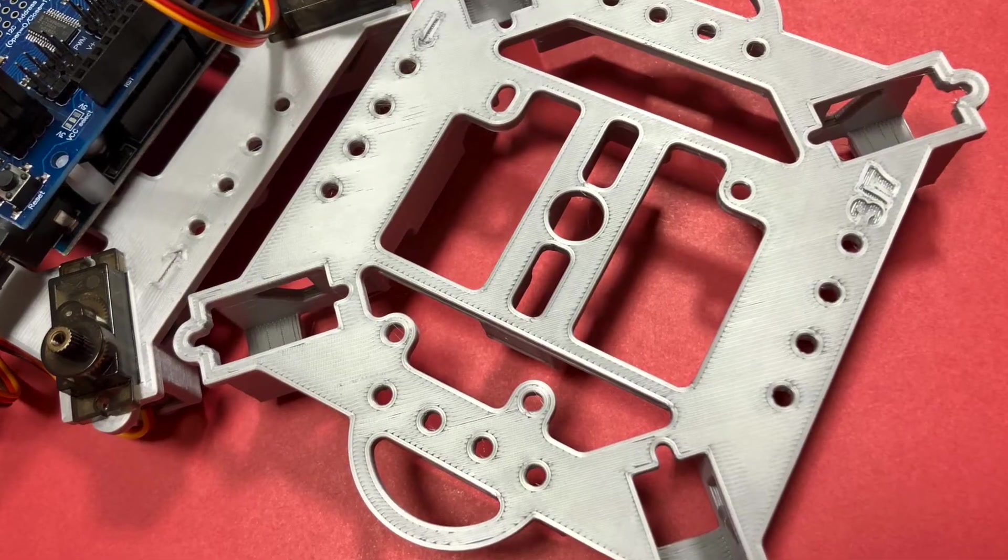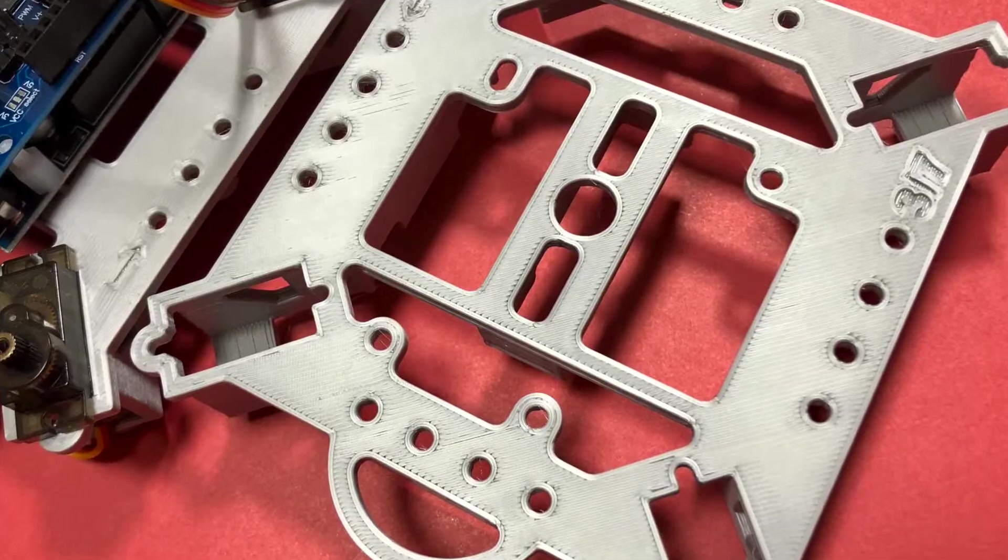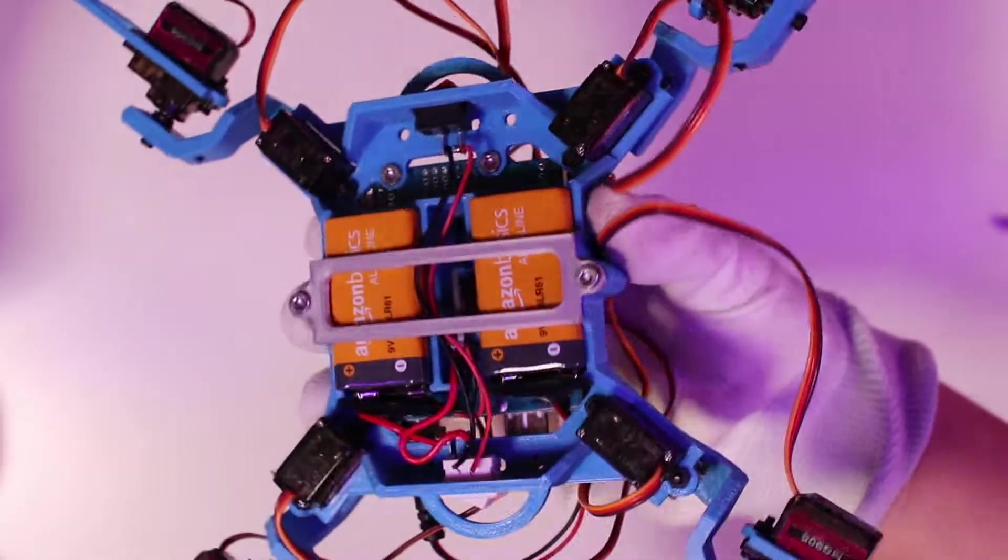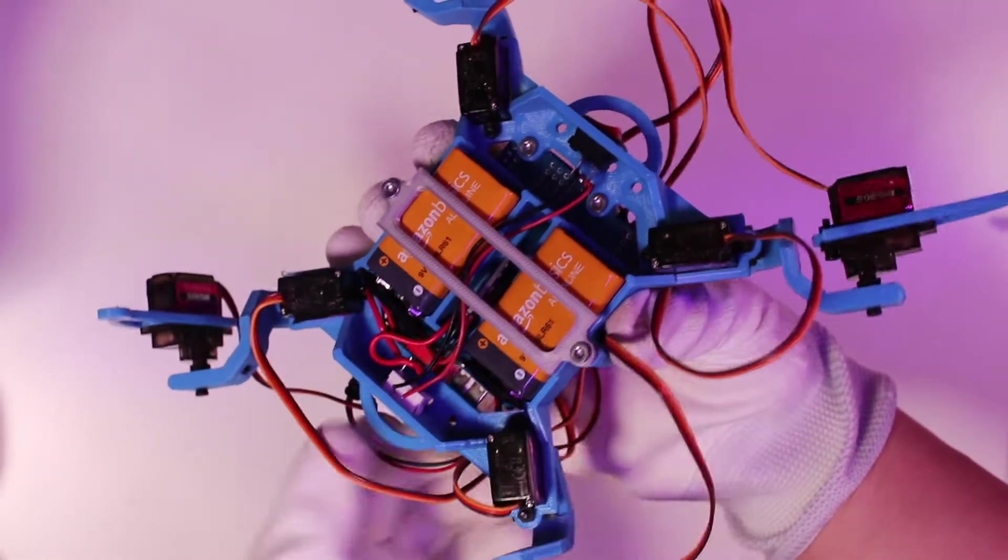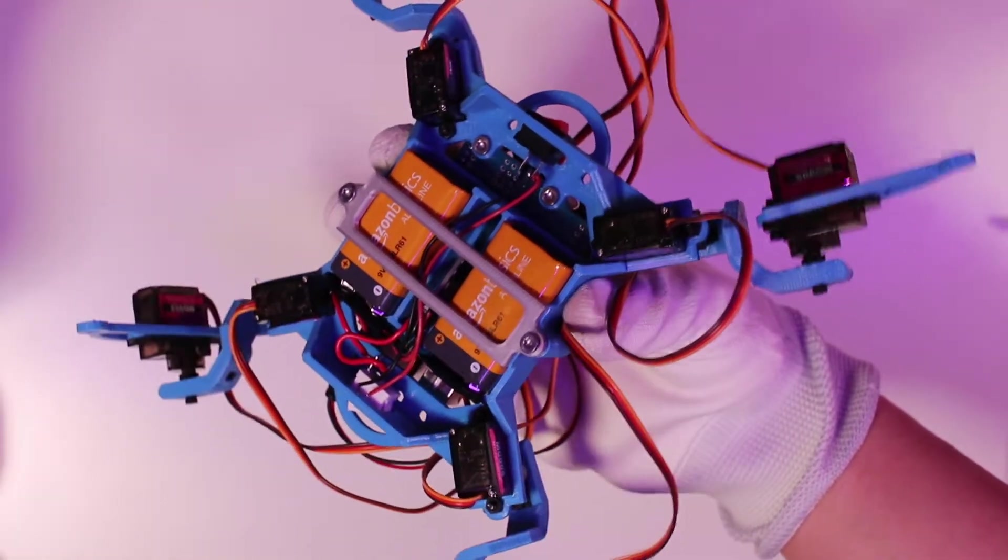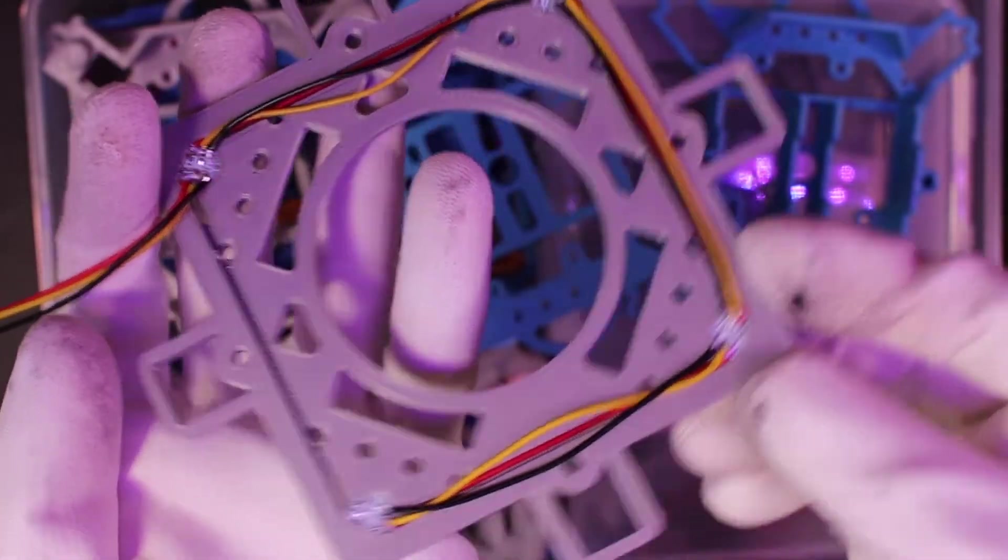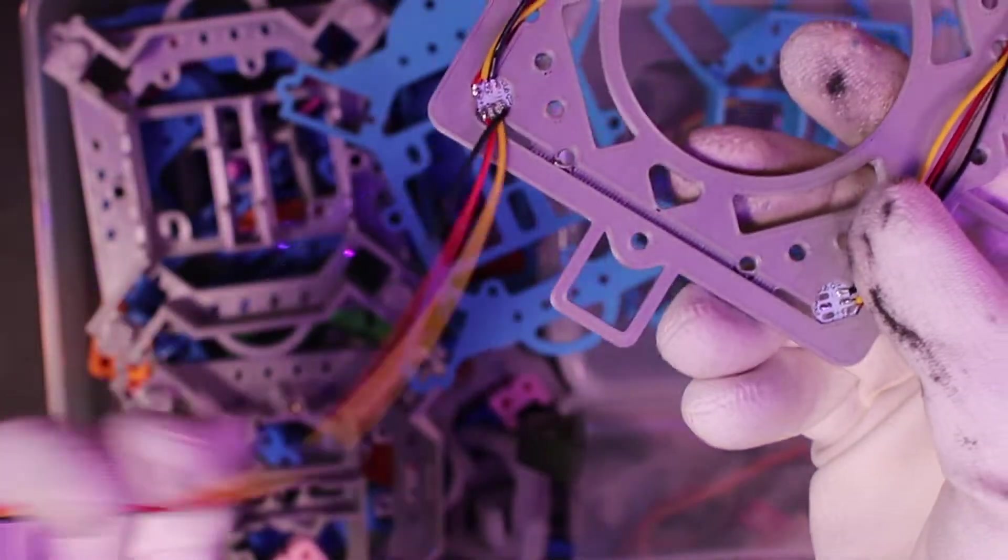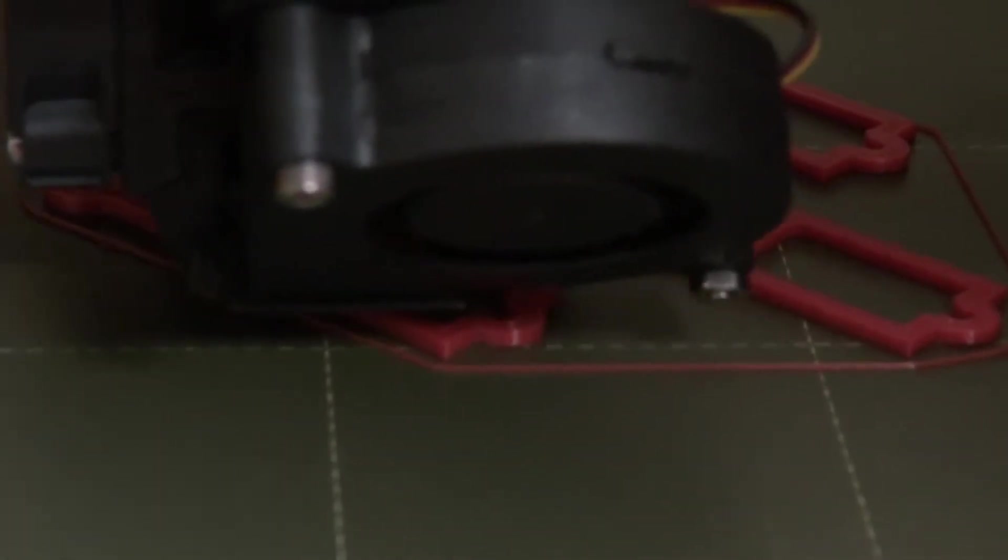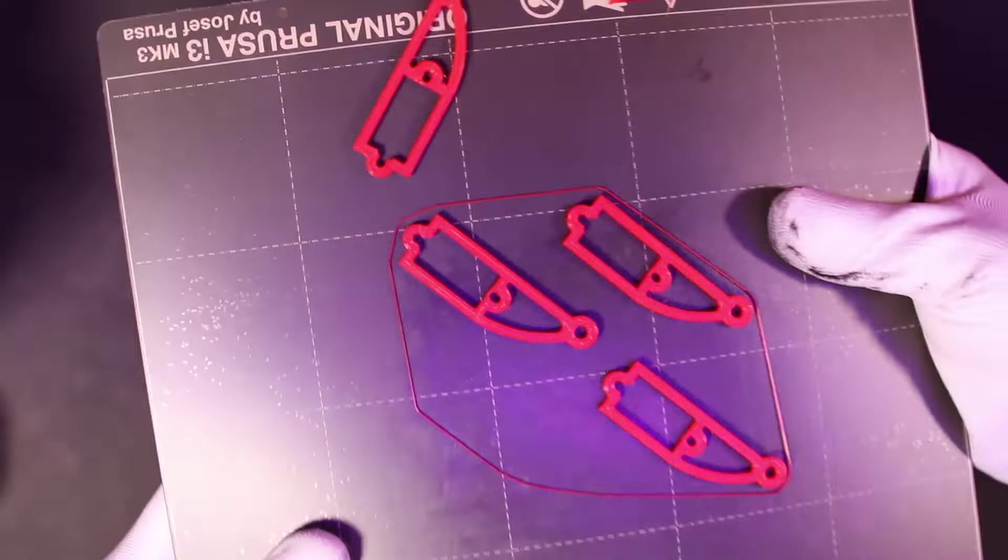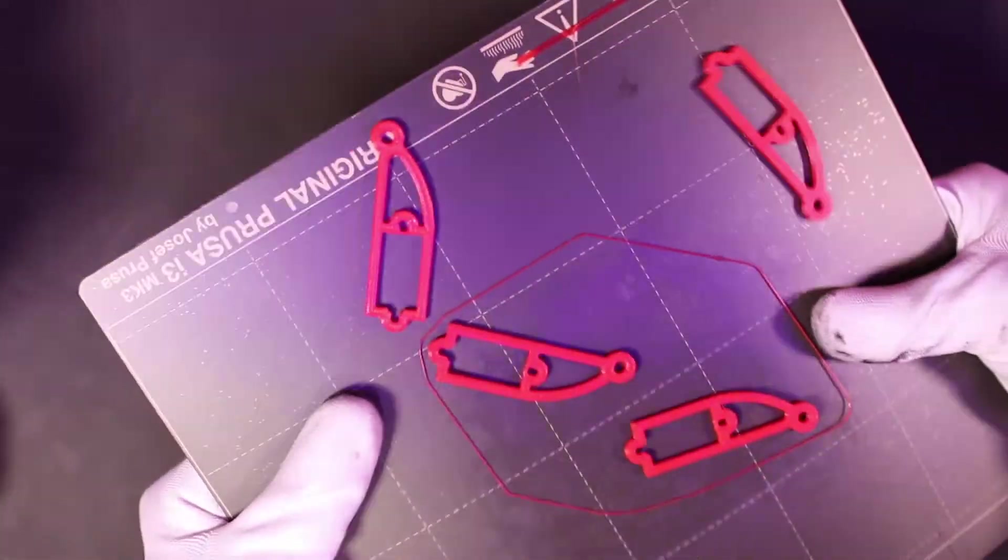For version 3, the goal is to reduce weight as much as possible. The main body has two batteries, one for the Arduino, the other is for powering the servos. I decided to remove the LED part for this version. And replace the legs with the new ones. New legs need fewer scoops, which means less weight.